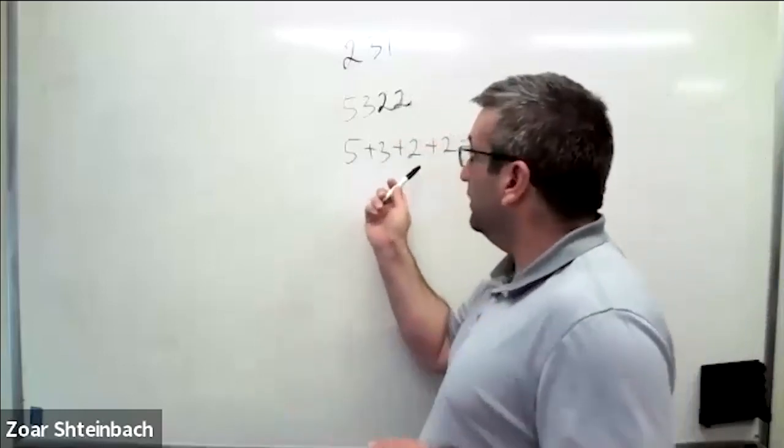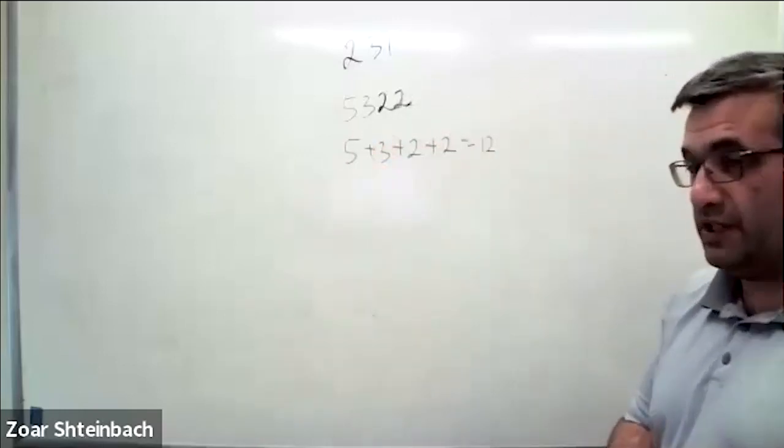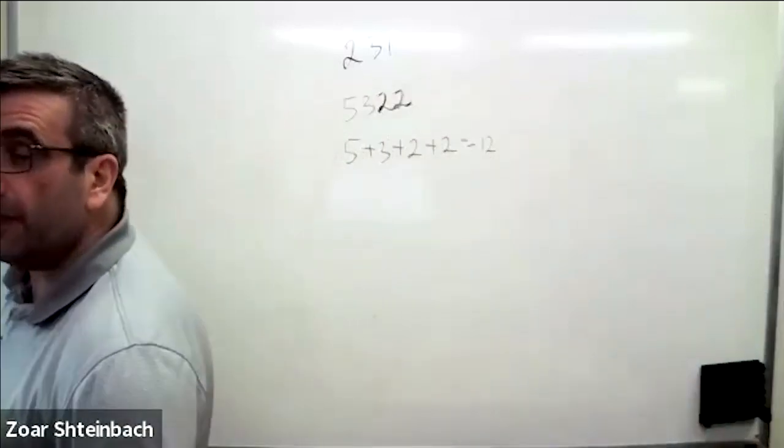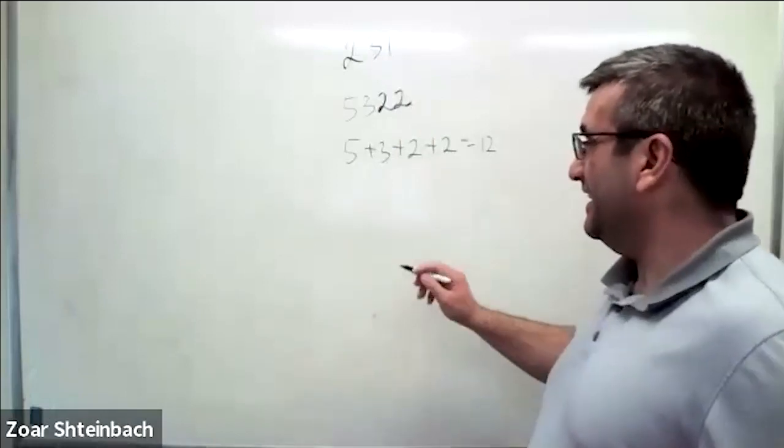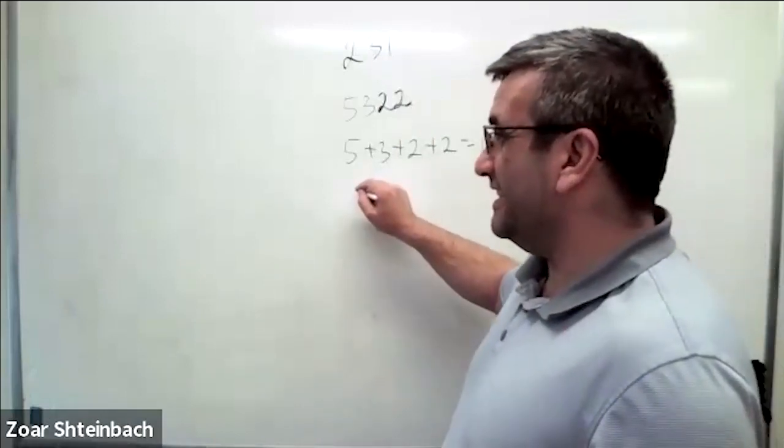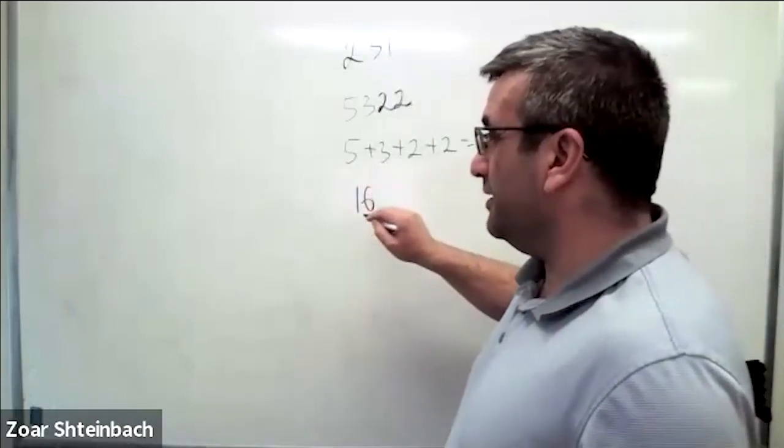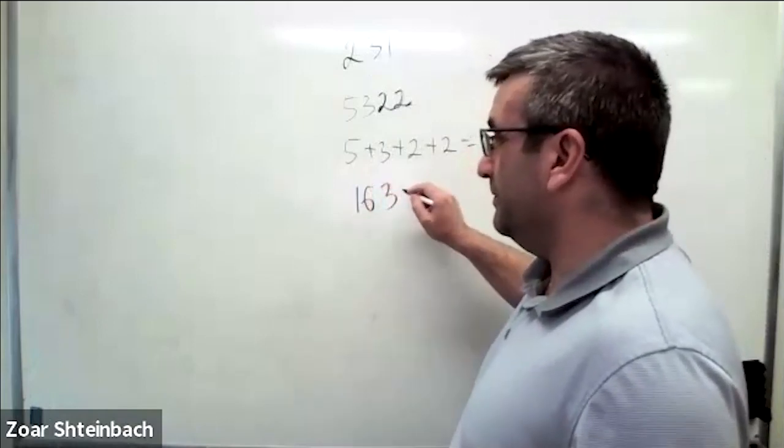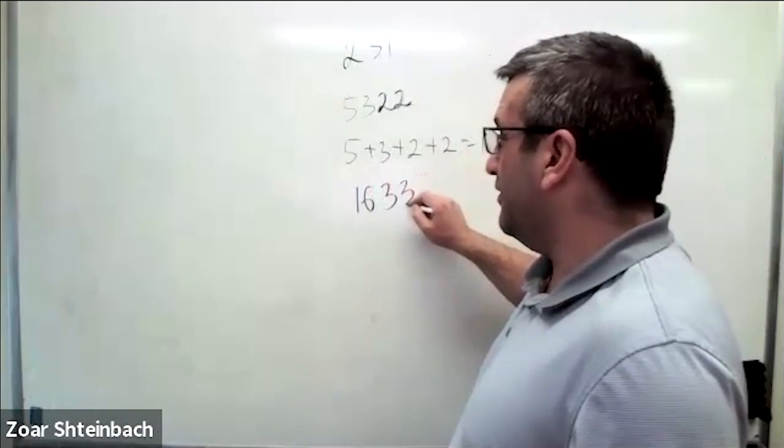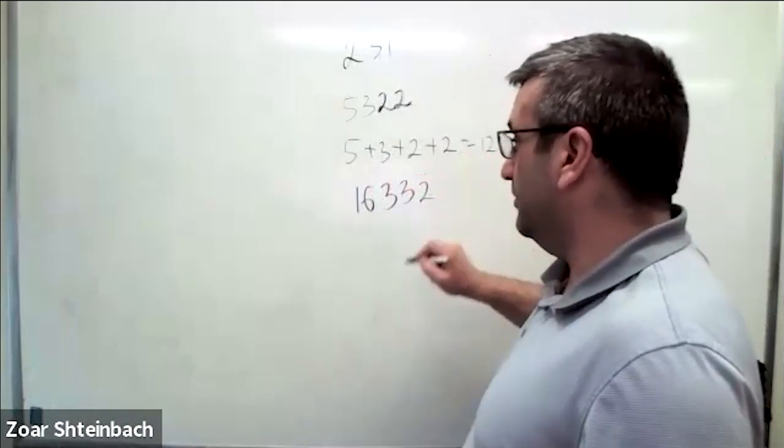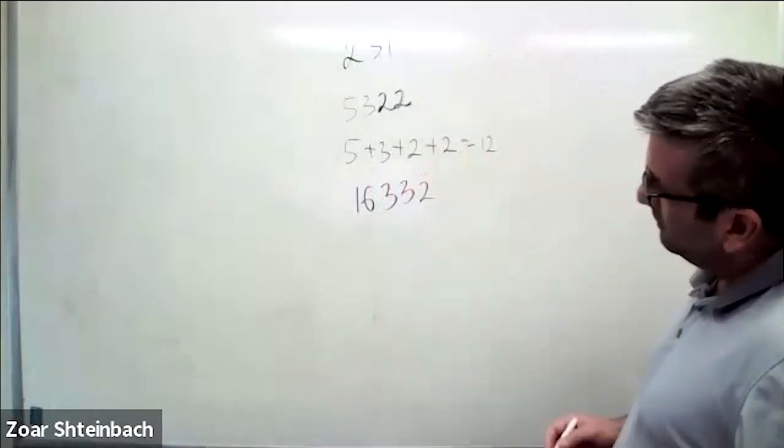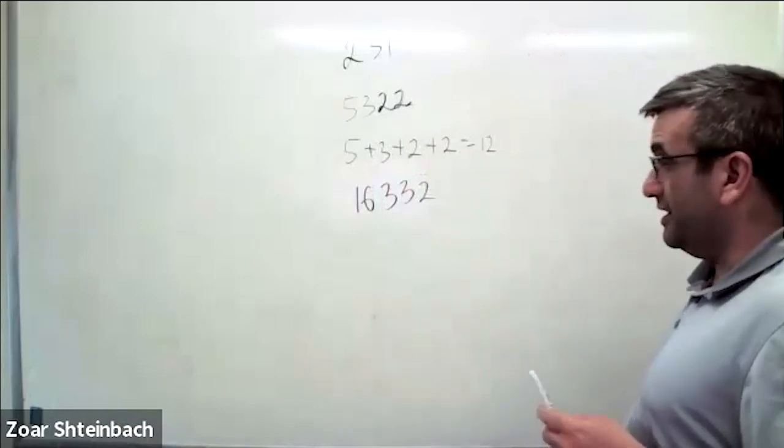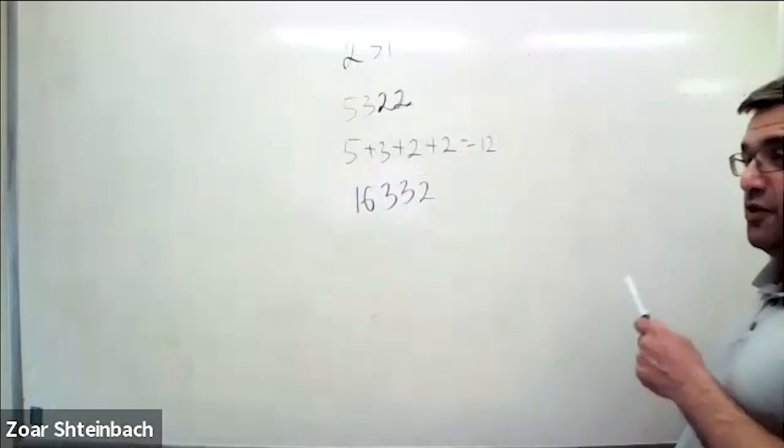Therefore 5322 is divisible by 3. Can I try another one please? Okay, we have 16332. By 3, what? By 3. 16332.